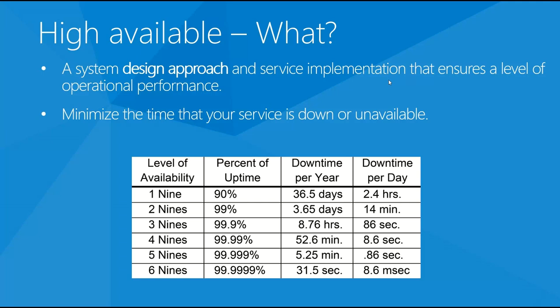HA is often measured in the percentage of uptime per year. Looking at the table of nines, we can see the famous but difficult-to-achieve standard known as five nines, which has a downtime per year of only 5.25 minutes. For comparison, Azure IaaS offers 99.95% availability when you have multiple machines in the same availability set, which means between four and five hours of downtime per year.